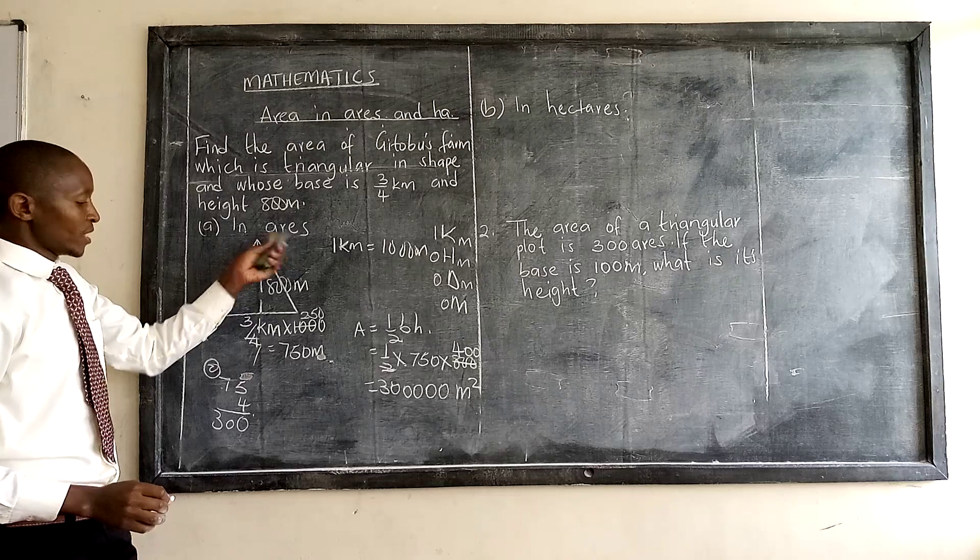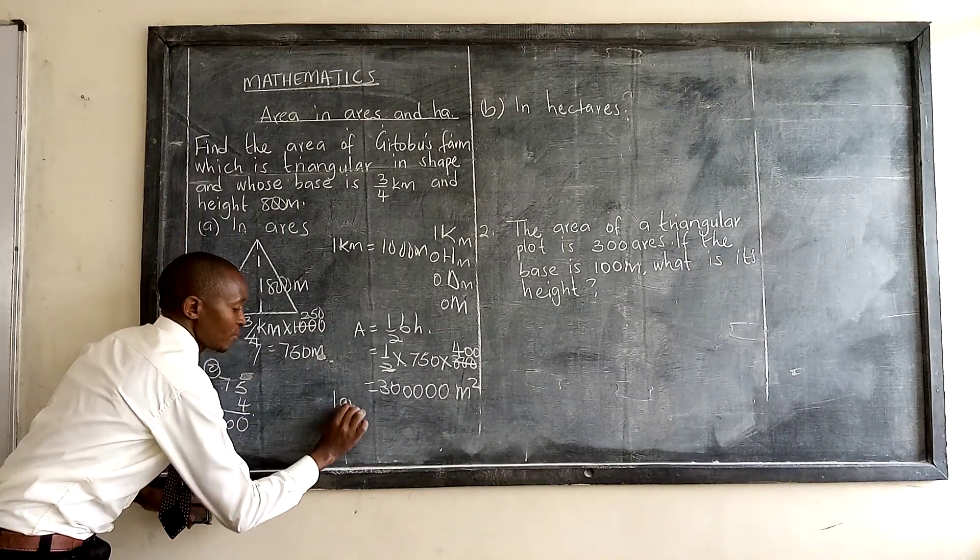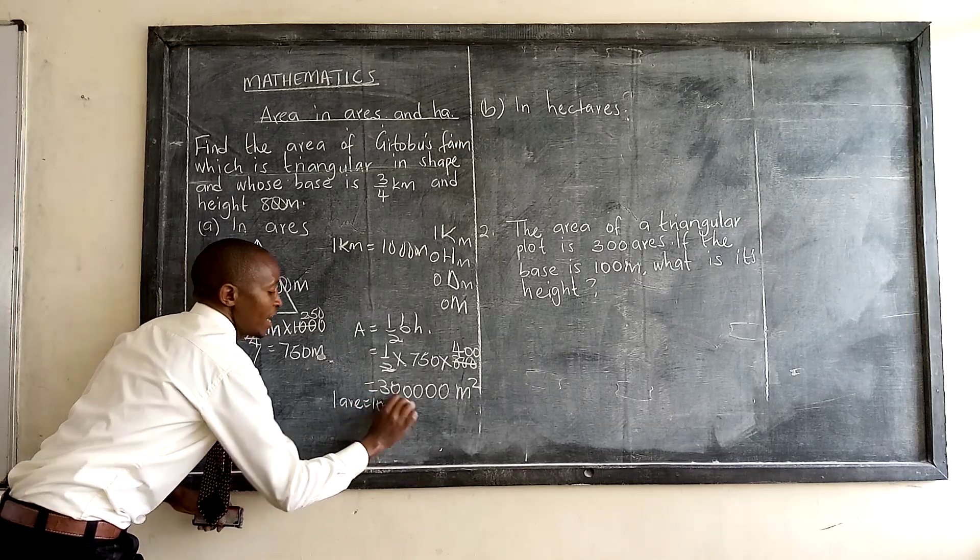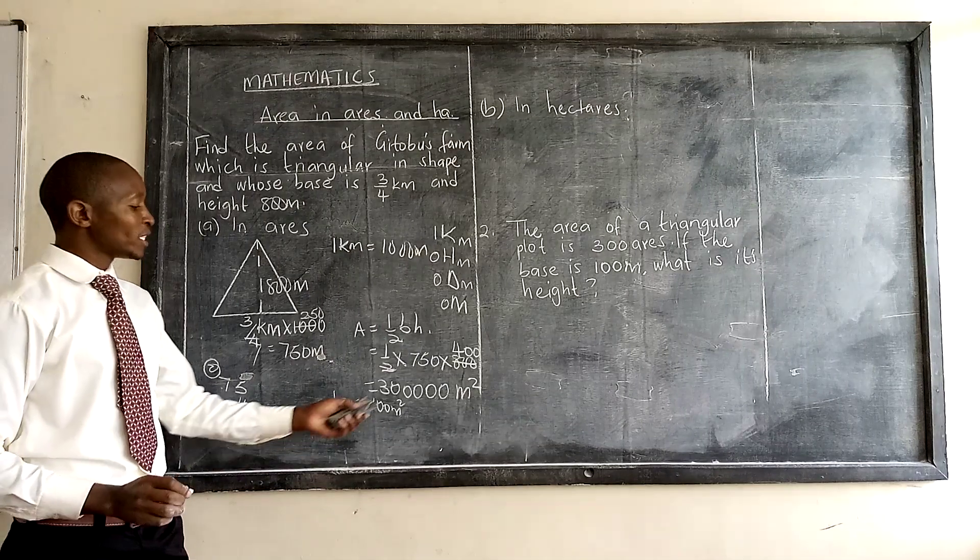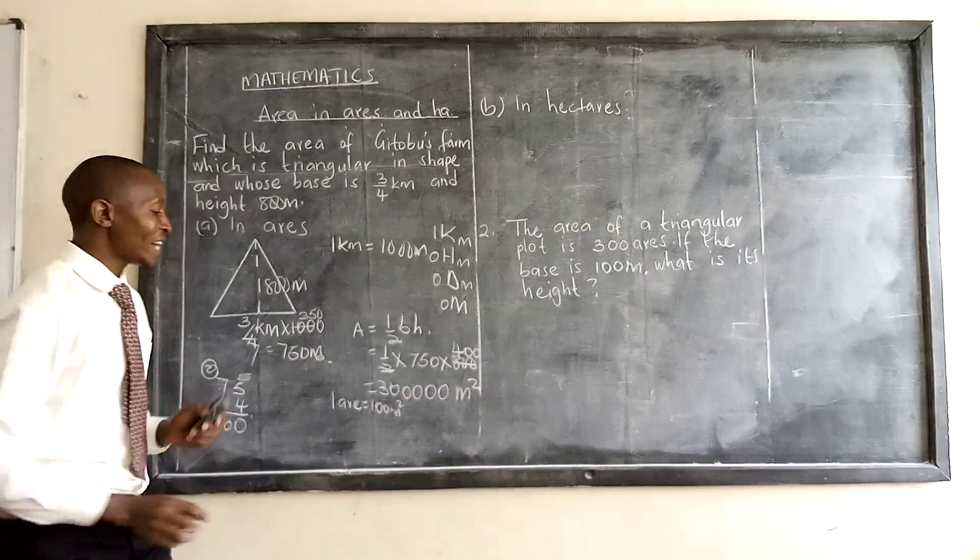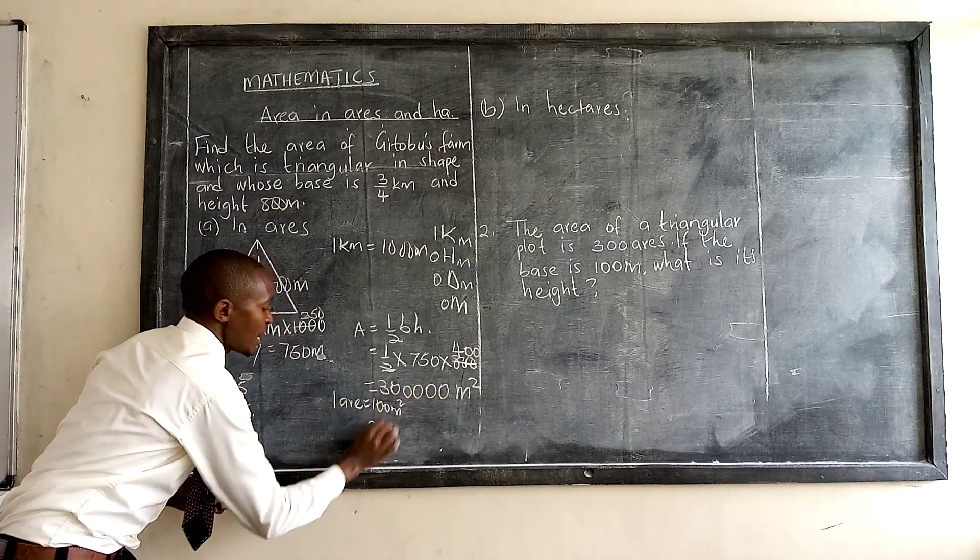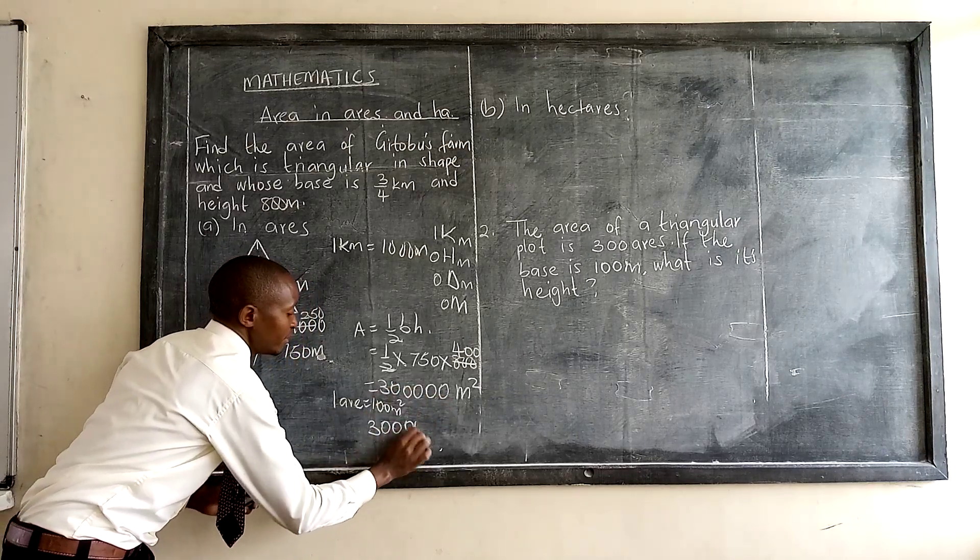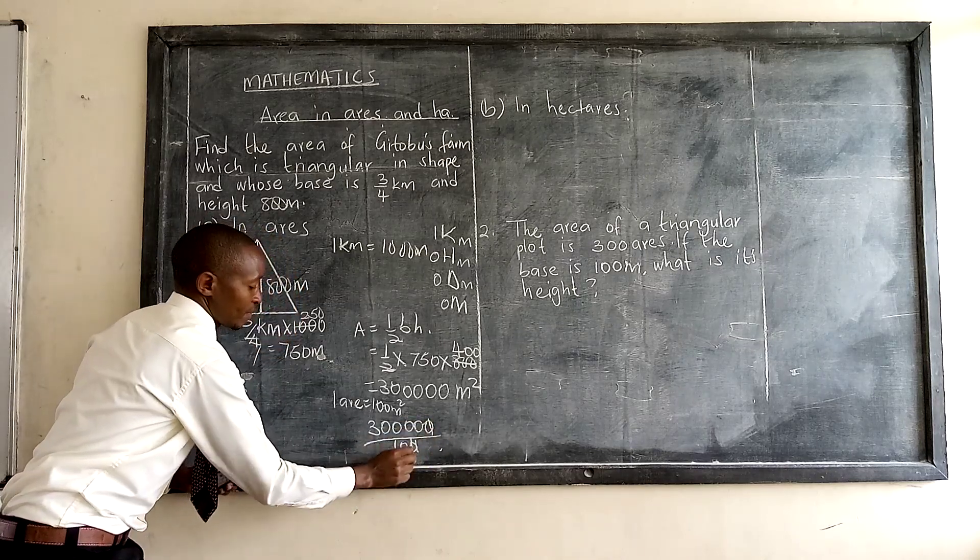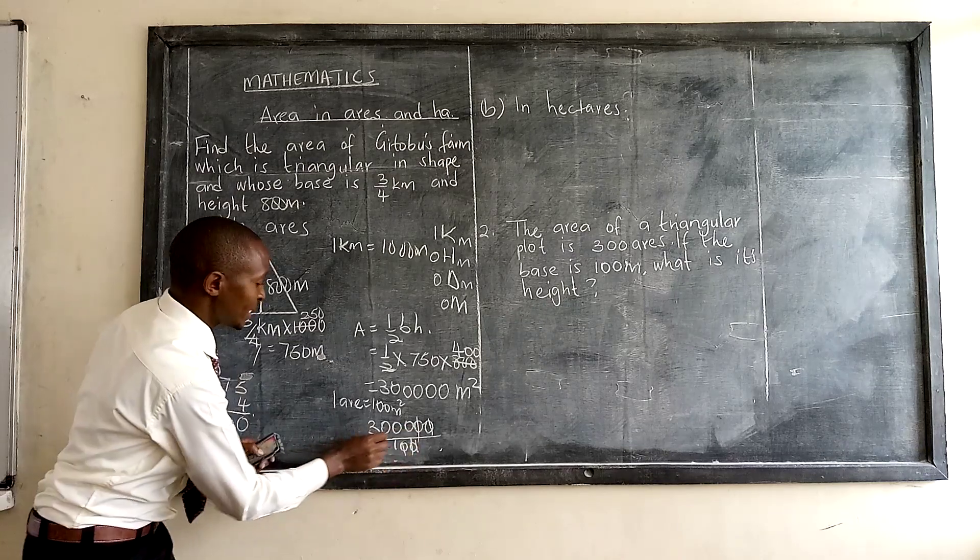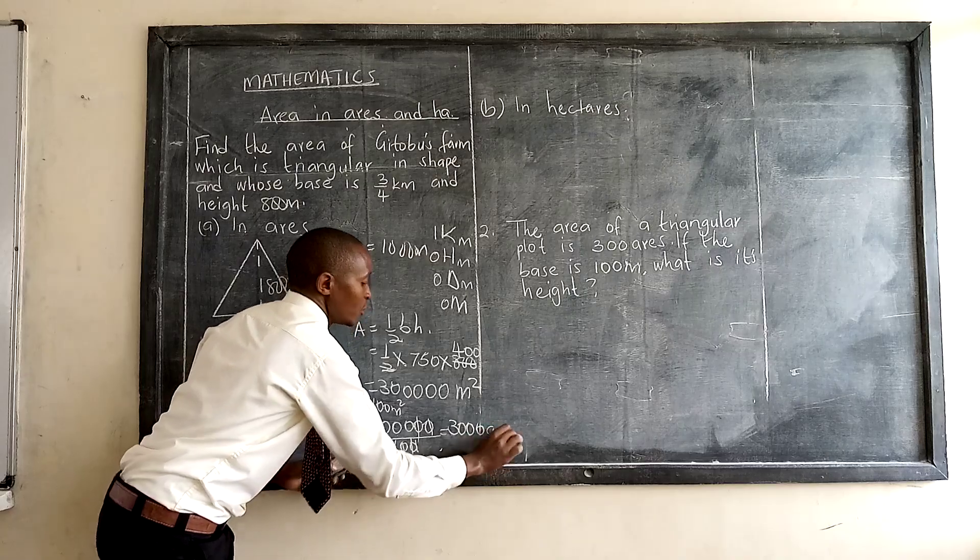We have 300, then we have our three zeros, and those are square meters. But then we need the answer in airs. Remember we are repeating: one air is equal to 100 square meters. So if you are getting your answer in airs, you simply need to divide this by 100. So you take that number, one, two, three, four, five, you divide that by 100.